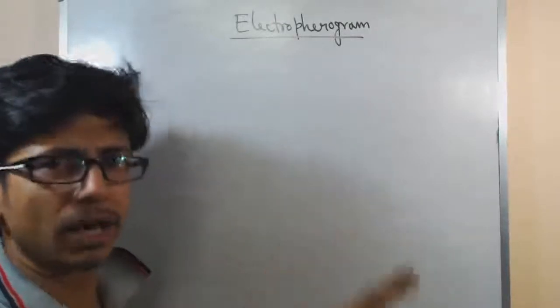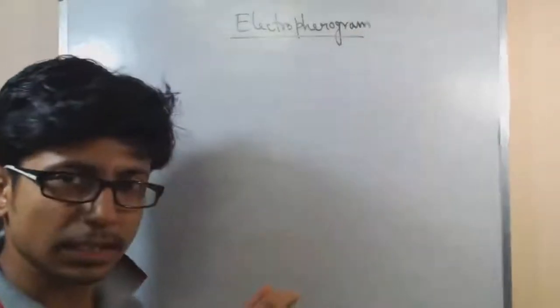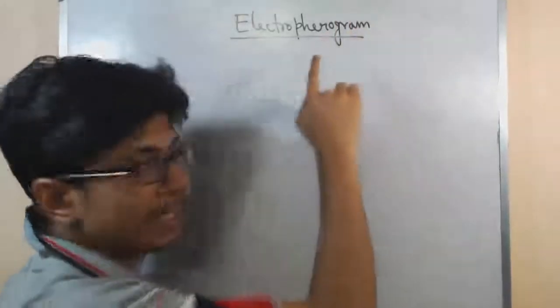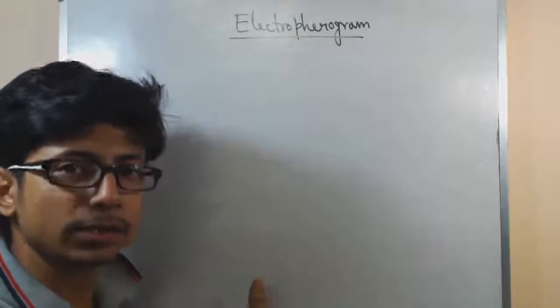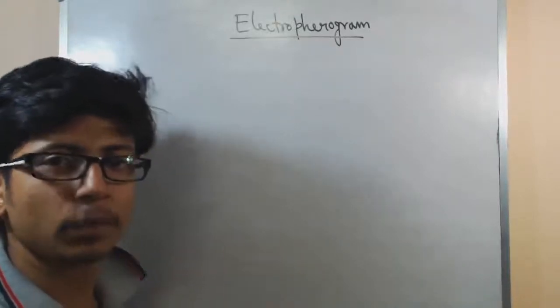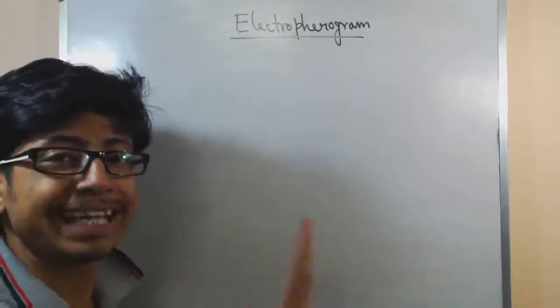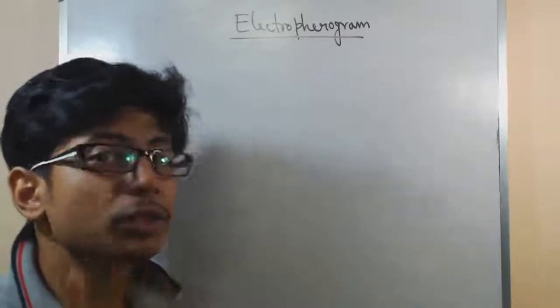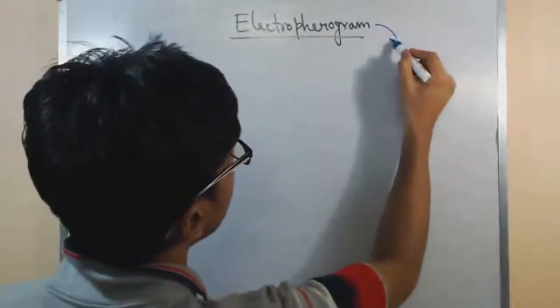What is the difference between 'graph' and 'gram'? 'Gram' refers to the data — the plot or graph we are looking at. On the other hand, 'graph' at the end means it is a machine performing the process. For example, chromatograph versus chromatogram — chromatography is the technique, and the chromatogram is the data sheet the technique delivers.